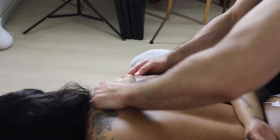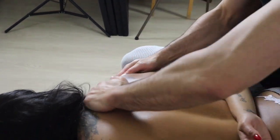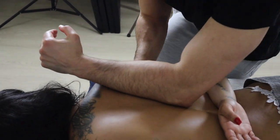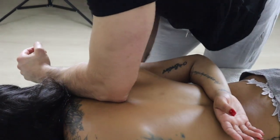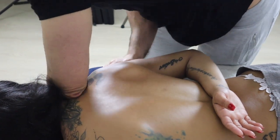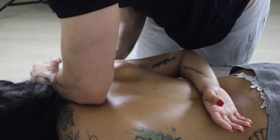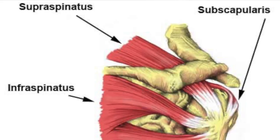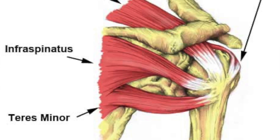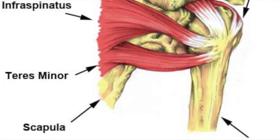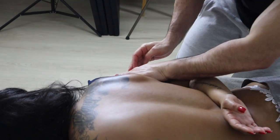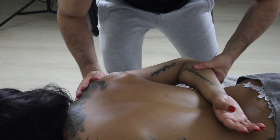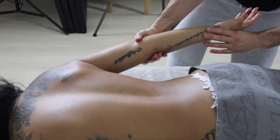That's what Ida Rolf was thinking — she believed fascia was a colloid substance. Right now I'm doing massage to the upper trapezius and the rotator cuff. Working on the rotator cuff muscles, they include the infraspinatus, supraspinatus, teres minor, and the medial rotator, which is the subscapularis.